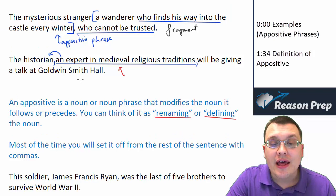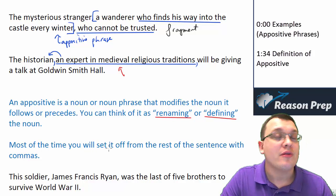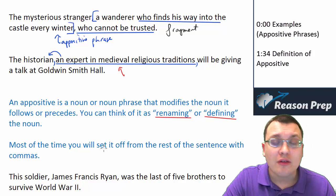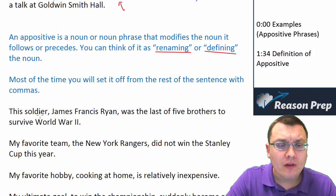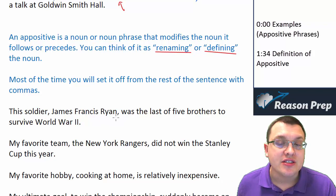Most of the time you're going to set the appositive off from the rest of the sentence with commas. Everything we discussed with essential and non-essential elements comes into play here. Most of the time they're going to be non-essential — they'll be extra info. Let's look at some examples of appositive phrases used correctly: 'This soldier, James Francis Ryan, was the last of five brothers to survive World War II.' Here the appositive phrase is defining who the soldier is, giving us more information, surrounded by commas.